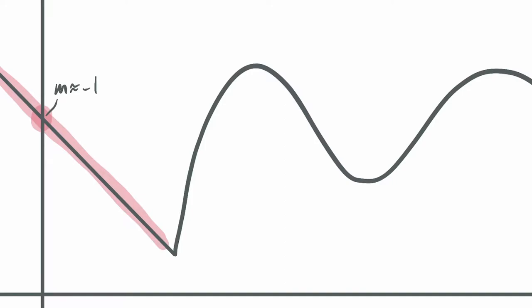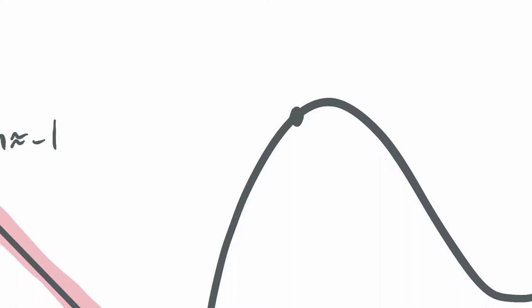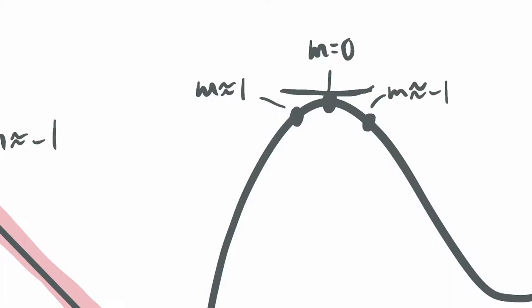If I go to this hill here and focus on a spot like right here, that looks to be about a positive one — m is roughly one. On the other side, maybe here m is about negative one. Right here at the top, the slope is exactly zero. I've got a horizontal tangent line — it would be horizontal.